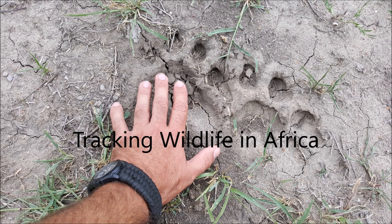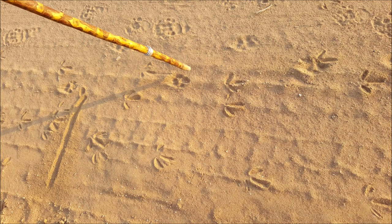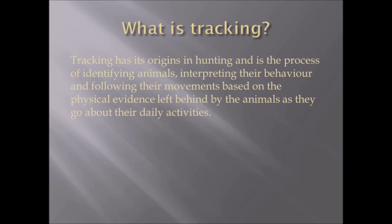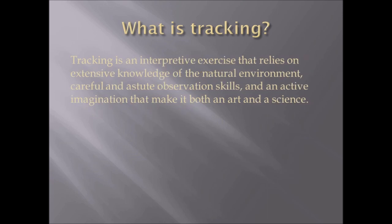This video is on track and sign learning — how to identify tracks and sign in the natural environment with a special emphasis on African wildlife. Tracking has its origins in hunting, as opposed to identifying animals. It involves interpreting their behavior and following movements based on the physical evidence left behind by animals as they go about their daily activities.